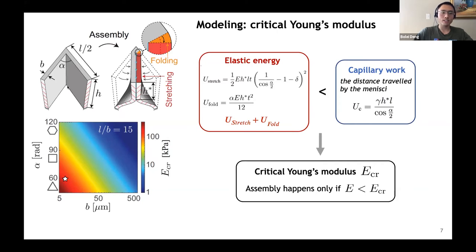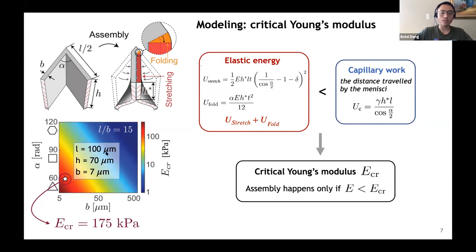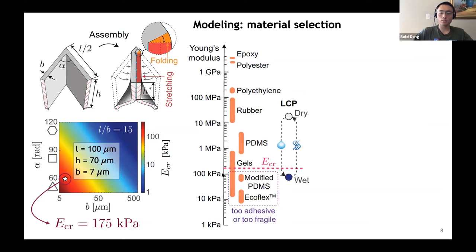We can plot E-critical from our theoretical model as a function of the angle between two walls, alpha, and the wall thickness, B. This plot gives us clear guidance on material selection and geometry design. For example, if you have a structure with thicker walls, you require a material with smaller Young's modulus — a softer material. In the light of simple fabrication and reasonable stiffness, we chose a triangular lattice with 100-micrometer length, which gives an E-critical of 175 kPa. Plotting this on commonly used materials, we find it is softer than most. But our strategy allows us to transiently soften those materials below E-critical so that assembly occurs, and then after assembly, as the liquid leaves, the material stiffens again.